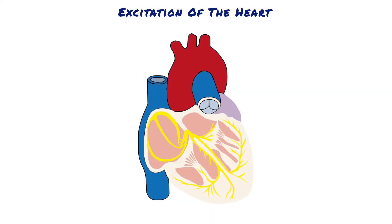After penetrating the fibrous tissue between the atrial and ventricular muscle, the distal portion of the AV bundle passes downward in the ventricular septum for 5 to 15 mm towards the apex of the heart. The bundle then divides into left and right bundle branches lying beneath the endocardium on the two respective sides of the ventricular septum. Each branch spreads downward towards the apex, progressively dividing into smaller branches that course sideways around each ventricular chamber and back toward the base of the heart. The ends of the Purkinje fibres penetrate about one third of the way into the muscle mass and finally become continuous with the cardiac muscle fibres.